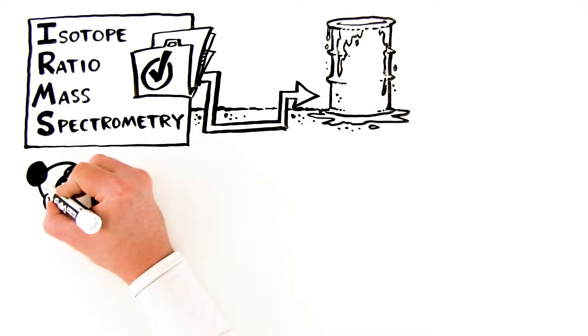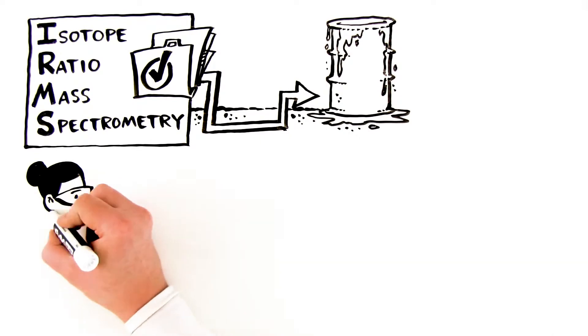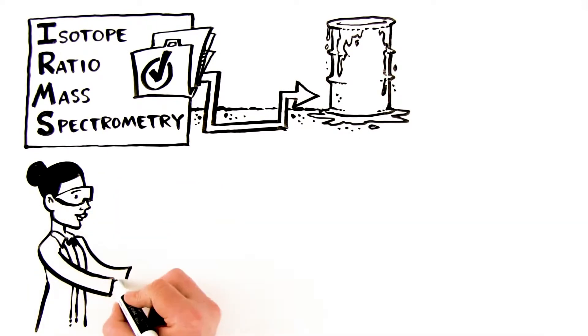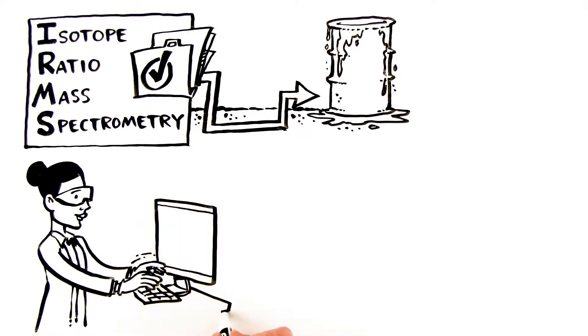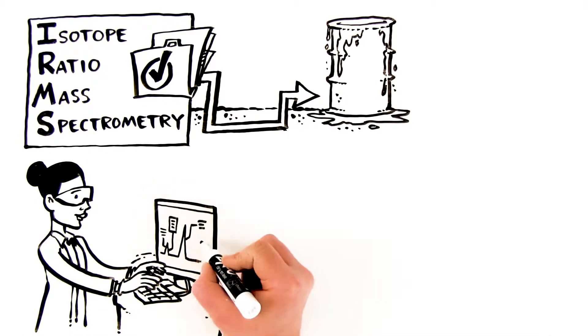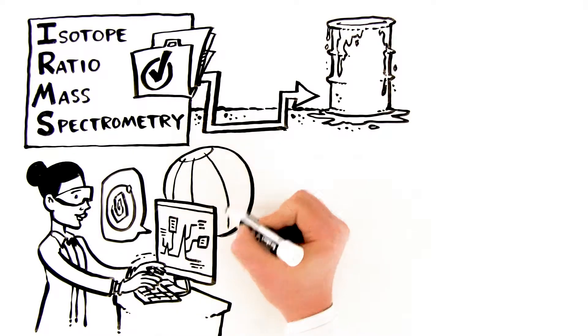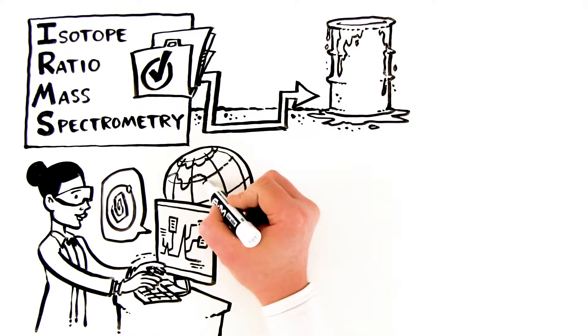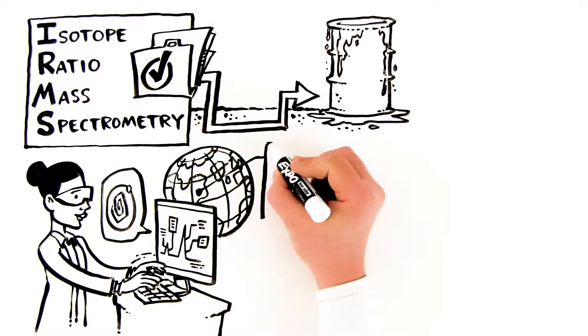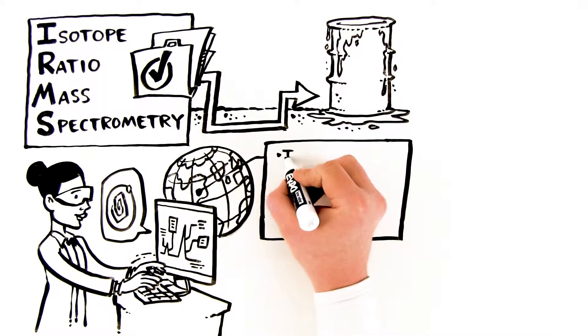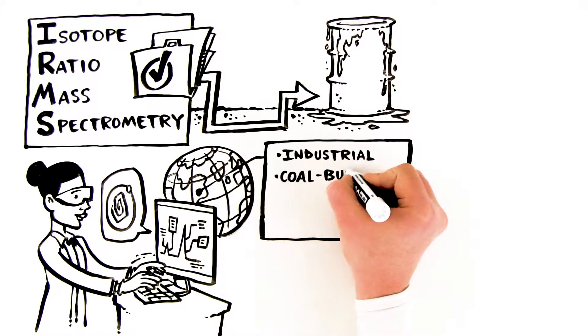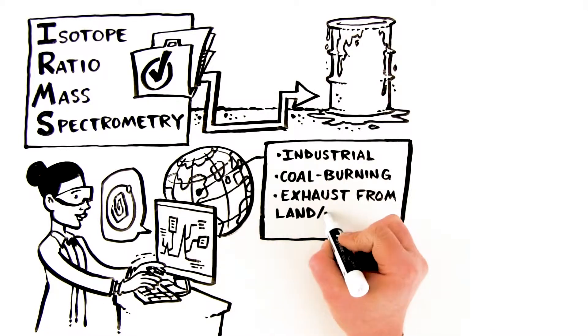When coupled to the isotope ratio mass spectrometer, thermoscientific peripherals allow you to analyze any sample's isotope fingerprint and trace its origin. So you can become an isotope hunter too. For example, you could identify the point on the planet where a sample of air pollutants came from, and whether they came from industrial processes, coal burning, or the exhaust from land, air, or sea transport.